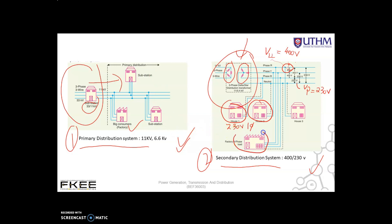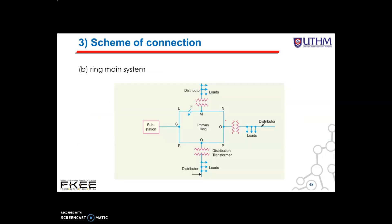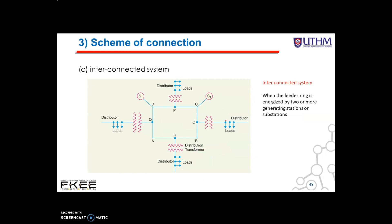Whereas the three-phase 400 volt motor loads are connected across three-phase lines directly. So for the factory it uses three-phase, and the residential house uses single-phase which is 230 volts. All distribution of electrical energy is done by constant voltage system. In practice, the following distribution circuits are generally used: the radial system, the ring main system, and the interconnected system.